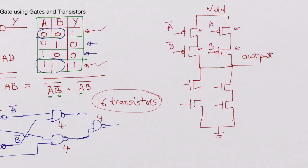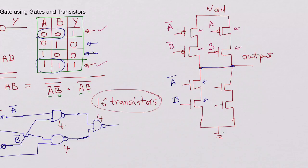Now we handle the paths to ground — the cases where output should be zero. For the case A=0, B=1, we assign Ā and B to one NMOS branch: Ā is high and B is high, turning on both NMOS devices and pulling the output to ground. For the case A=1, B=0, we assign A and B̄ to the other NMOS branch: A is high and B̄ is high, turning on those two NMOS devices and grounding the output.